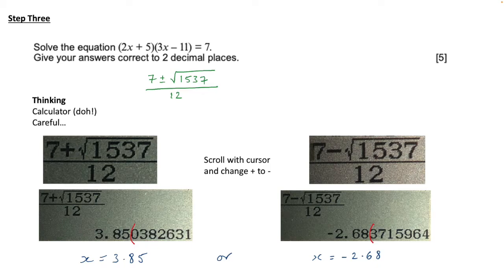Now at this point or later on, perhaps when you've finished and you're checking back through your paper, it's worth putting these values into those brackets. So you do 2 times 3.85 plus 5 bracket 3 times 3.85 take away 11 and see what that comes to. It won't be exactly 7 because we've rounded off but it would be very close to 7 if we've got it right.